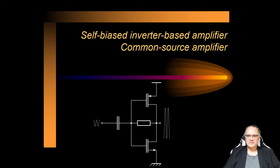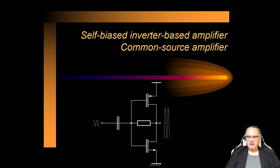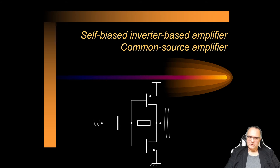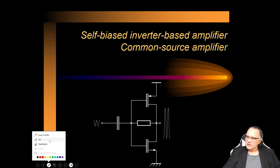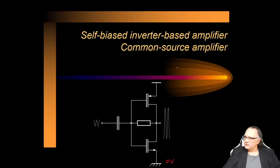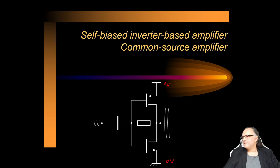My name is Georgi Radulov and I'll discuss the self-biased inverter-based amplifier. This is an example of a common source amplifier — a very simple example. It uses only two transistors, an NMOS and a PMOS transistor, and the architecture stacks these two transistors from zero to VDD. Because we stack only two transistors from zero to VDD, this architecture is very suitable for use in modern IC processes that use reduced voltage headroom.